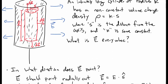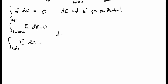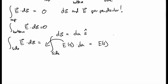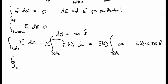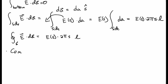The electric field and dA are in the same direction — more precisely, dA equals magnitude dA in the s-hat direction. So this product becomes the electric field times dA magnitude. The electric field comes out of the integral, so we just integrate the area of the side. The area of the side of the cylinder is 2πs times its length L. So the total flux through our Gaussian surface is E times 2πsL.